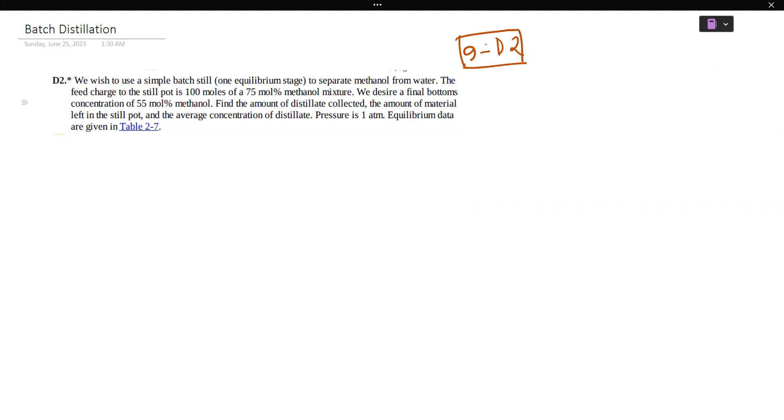According to the data given from the equilibrium data, the question states we wish to use a simple batch still with one equilibrium stage to separate methanol from water. The data is about a simple batch distillation setup with a still pot, condenser.